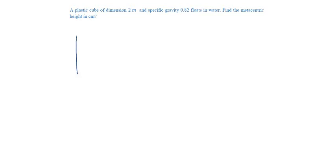A cube of height 2 meters, dimensions 2 meters and specific gravity 0.82 floats in water. Say the submerged depth is x, then this will be 2 minus x, since the total depth is 2.